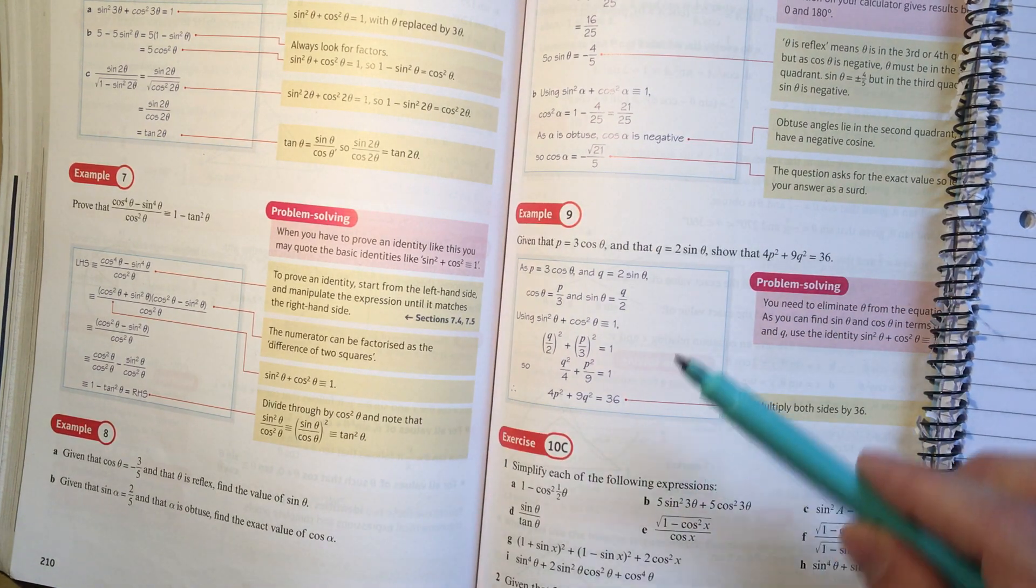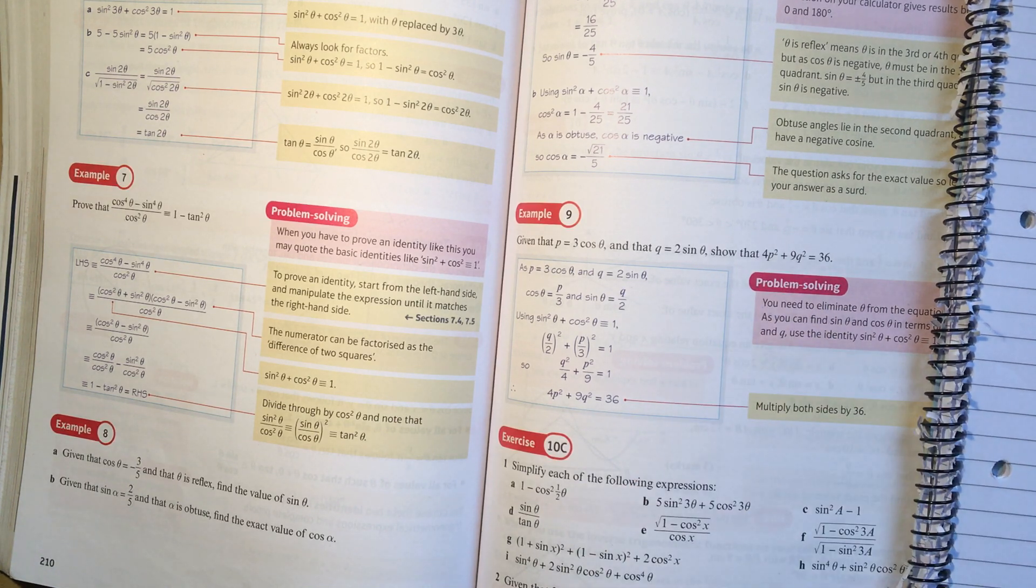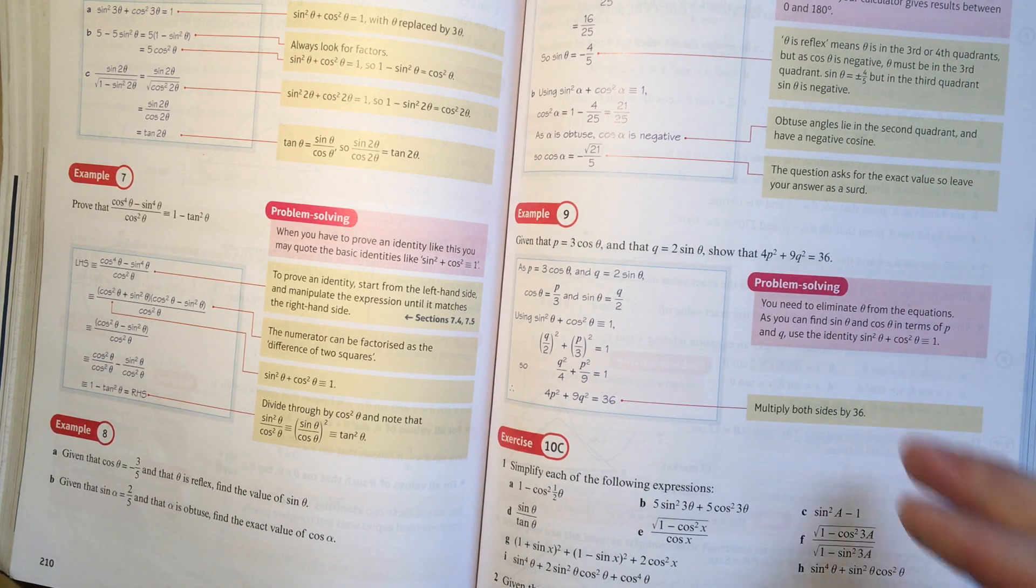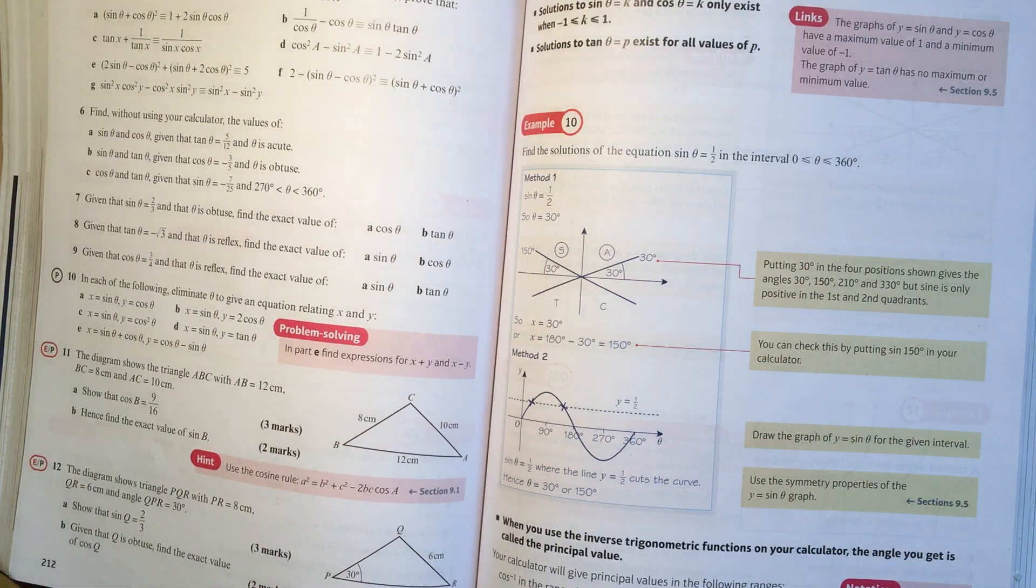Example nine. I'm sure you can follow through example nine and read through the things. The only comment on example nine is that it's not particularly a standard question. It's just an example of ways that they can take the facts that we know and mix them up in an unusual way and ask us to solve a new kind of a puzzle. So it's just another example of how to use their identities. So that takes us to the end of 10c.